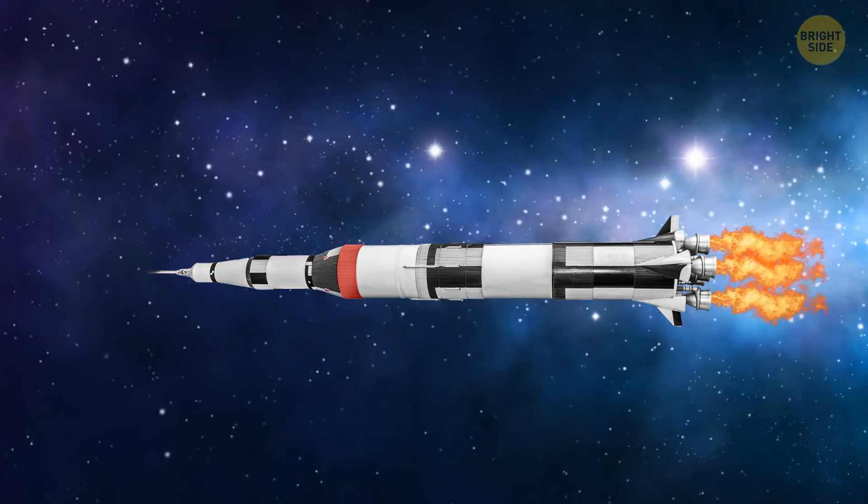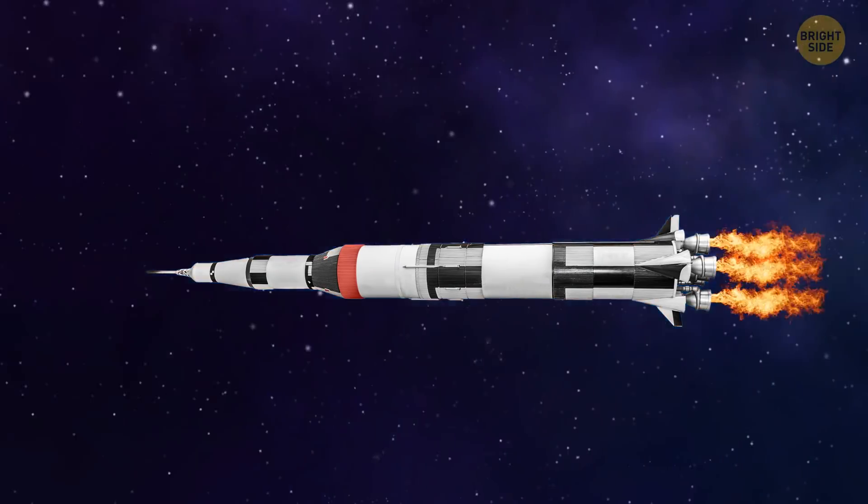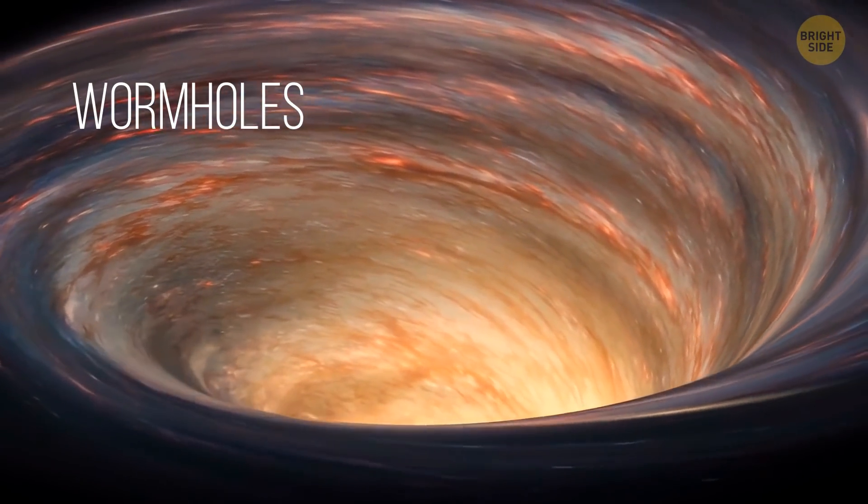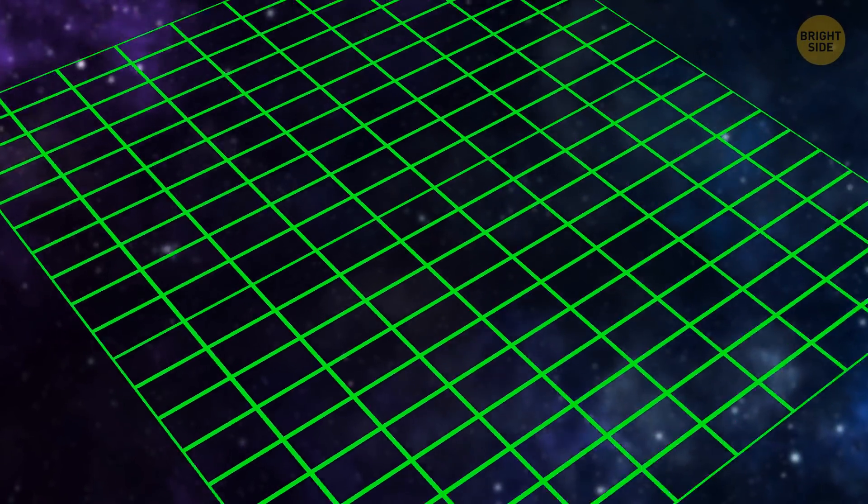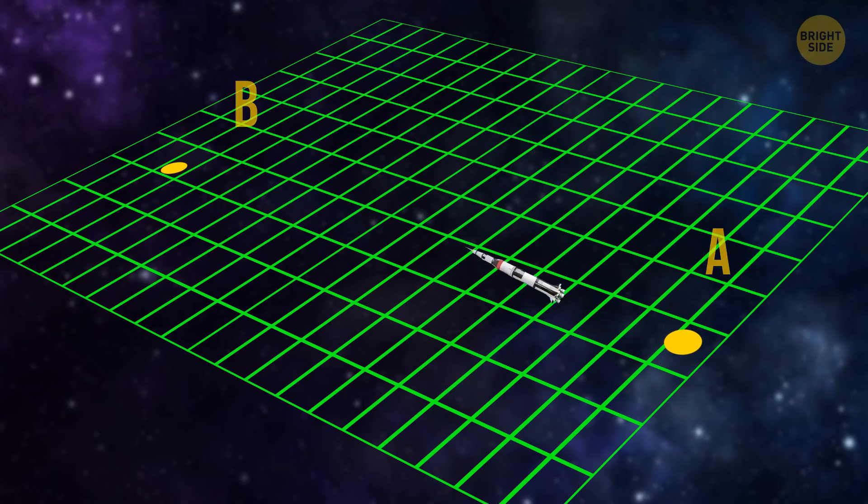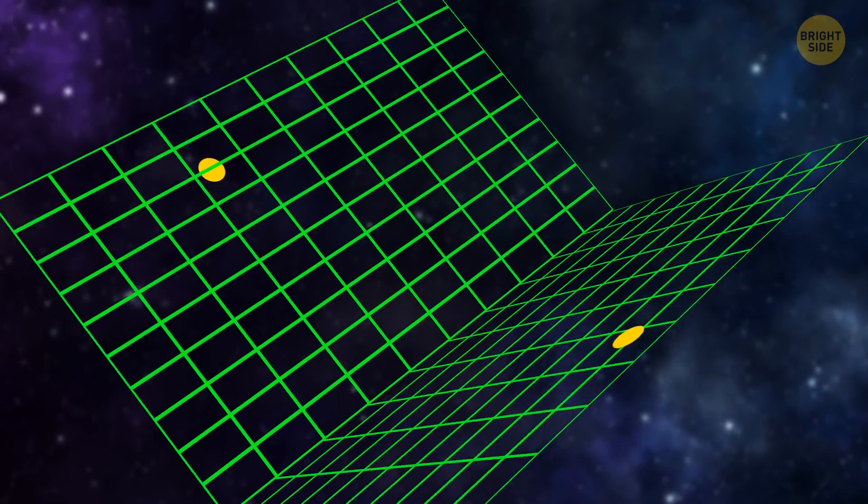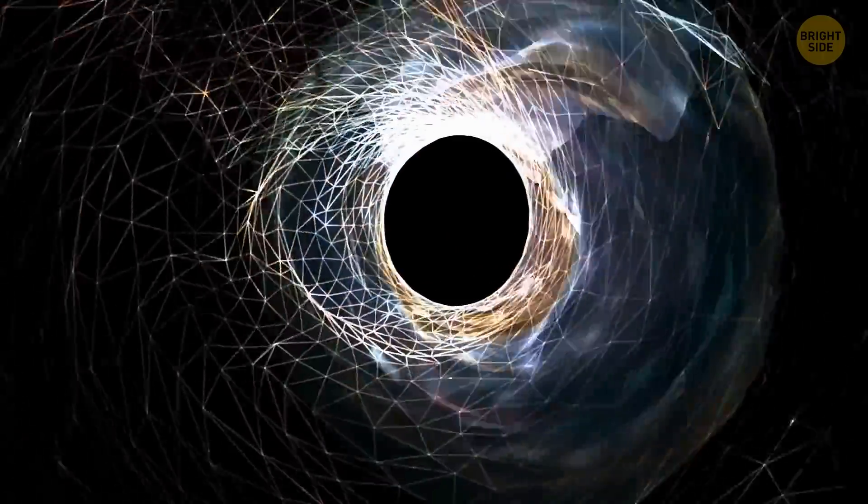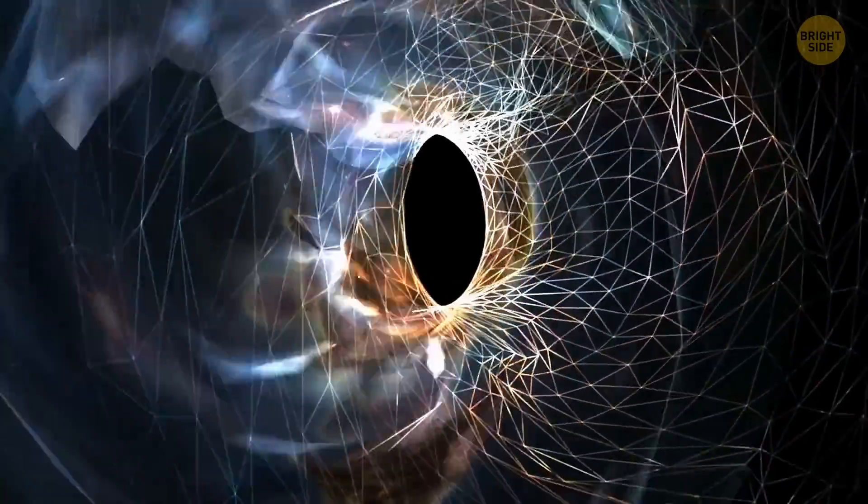Perhaps people will still be able to travel between galaxies and conventional rockets, but they'll need to use some sort of shortcuts called wormholes. So, back to our space-time blanket. Point A lies at one end, and point B is at the other. Instead of traveling across the entire blanket for millions of years, you can simply fold it. Then, point B will be right above point A, and you can quickly get there through a short tunnel between them. Such tunnels are called wormholes.